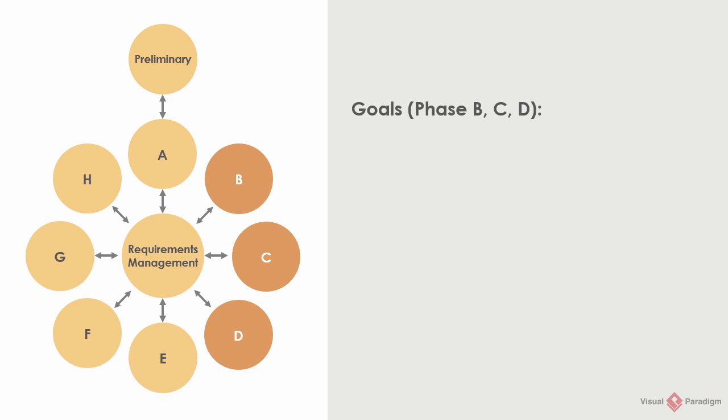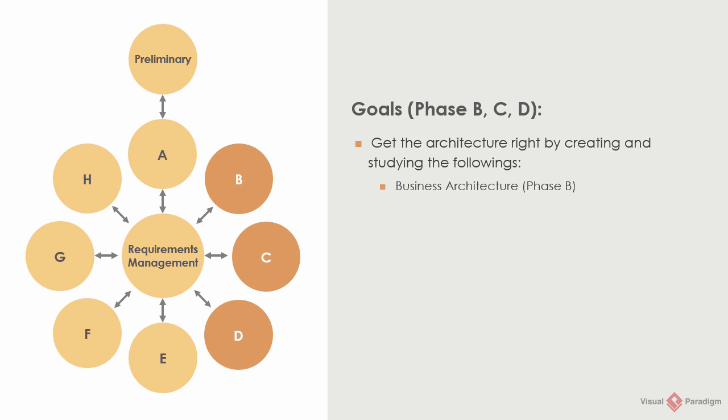The main goal of the three phases is to get the architecture right. Each phase focuses on a specific architecture domain. An enterprise architecture consists of three domains: the business domain, information systems domain, and technology domain, which are the focuses of Phase B, C, and D respectively.